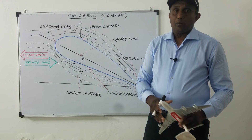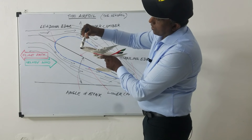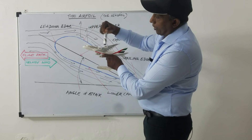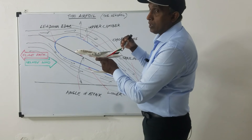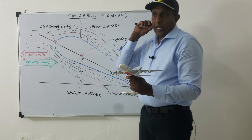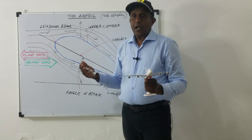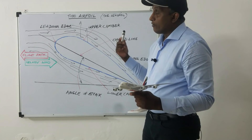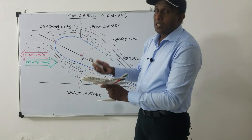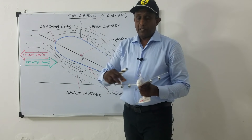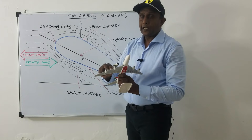All aircraft generate lift because the aircraft body is also designed in an aerofoil shape. Not only the body, but all aircraft parts — propellers, elevators, and all other parts — are designed as an aerofoil shape, so all parts generate lift. But mainly the wings generate the most lift.